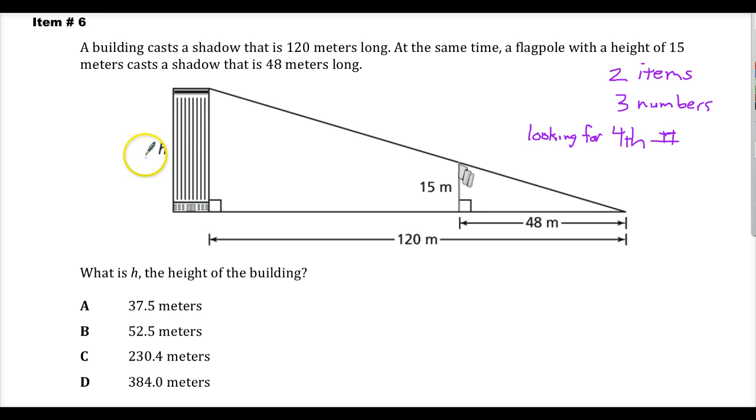And I'm looking for the fourth number. So in this case, do I have two items? Yep. Building, flagpole. Do I have three numbers? I do. That's why I thought it was proportion. Generally my brain goes three, two, four, and I'm looking for the fourth one. You'll notice that these are in similar relationships. So there's the building, the flagpole's here, so yeah, I'm looking for the fourth one.